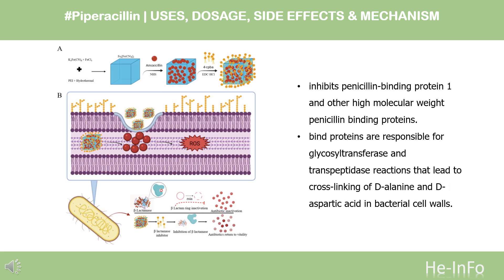Mechanism of Action. By binding to specific penicillin-binding proteins (PBPs) located inside the bacterial cell wall, piperacillin inhibits the third and last stage of bacterial cell wall synthesis. Cell lysis is then mediated by bacterial cell wall autolytic enzymes such as autolysins. It is possible that piperacillin interferes with an autolysis inhibitor.